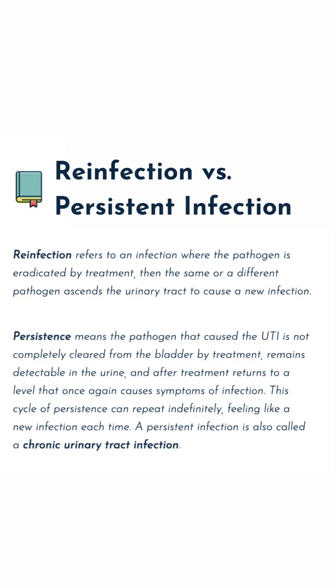A chronic UTI, also known as chronic cystitis, is usually considered as a persistent infection that wasn't fully cleared by treatment. There is evidence to suggest that many recurrences of UTI could actually be caused by an underlying infection that persisted due to ineffective initial treatment. For some, a chronic bladder infection can result in continuous symptoms.